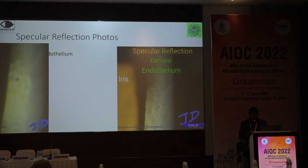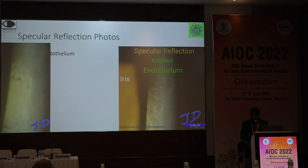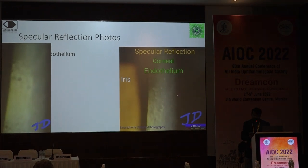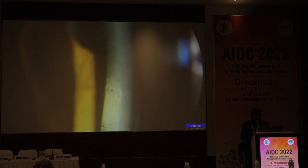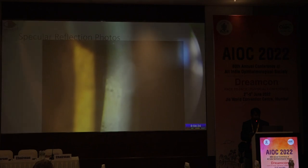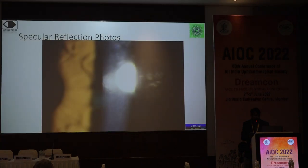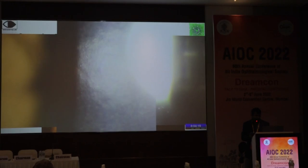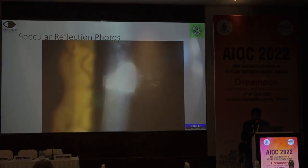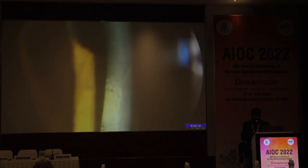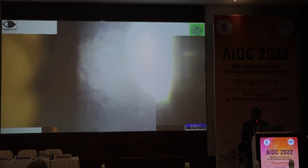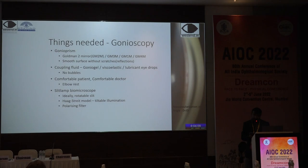Specular reflection photographs — these are taken with a smartphone. It takes patience because the focus has to be perfect. This one was taken by a friend with a DSLR camera, so you get pictures like that. With the smartphone you will get this — you can still see if you have guttae. If you want to convince a patient that they have guttae, you can take a photograph and show them.